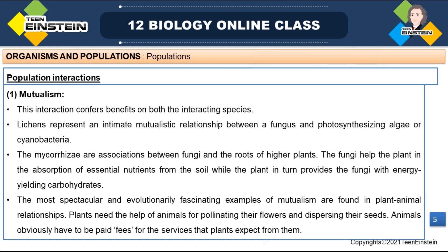Another example is mycorrhizae, which is also a mutualistic relationship between fungus and roots of higher plants. In this, the fungal part absorbs essential nutrients from the soil, and the plant provides energy — that is, carbohydrates — to the fungal part. Both lichen and mycorrhizae are examples of mutualism.